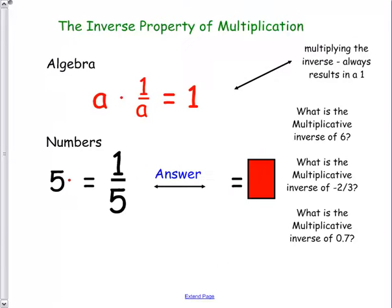And then the inverse property is where we multiply by the inverse. Now, last year you talked about fractions. Inverses are the fraction flipped over, right? So we could always multiply A times 1 over A to get 1.